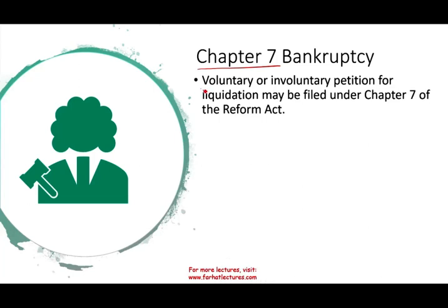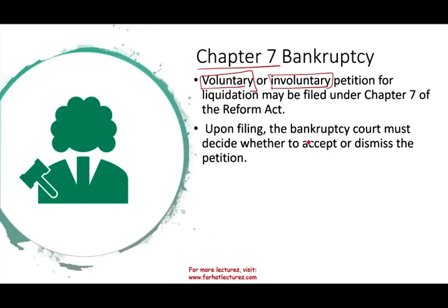Chapter 7 can be a voluntary or involuntary petition. The business can say they would like to file for bankruptcy, or the creditors can ask to file for a bankruptcy. For the creditors to file, we looked at the requirements in the prior chapter recording. Upon filing, the bankruptcy court must decide whether to accept or dismiss the petition. If an involuntary petition was filed, the debtor might try to dismiss the case.